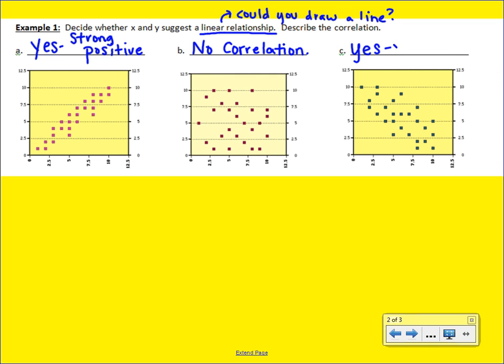So we would say this is negative correlation. But we would probably call it weak negative just because they wouldn't be hugging that line of best fit very closely.